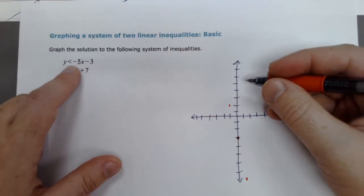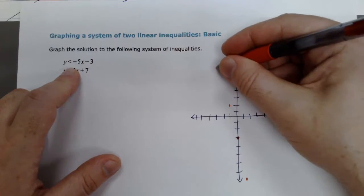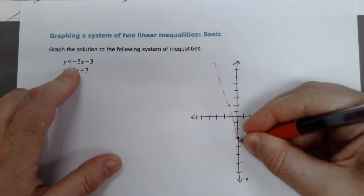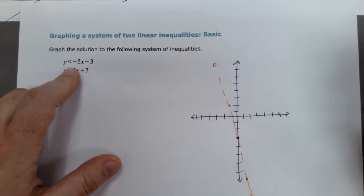So now, solid or dashed, this one is just a strictly less than, so that is a dashed line. Okay, and I'm going to hold off on shading, because I want to shade one thing at the very end.